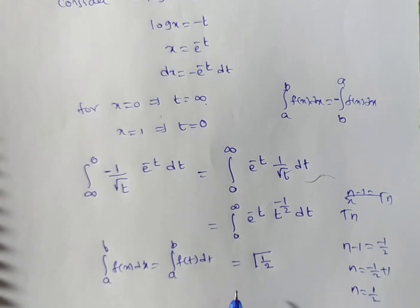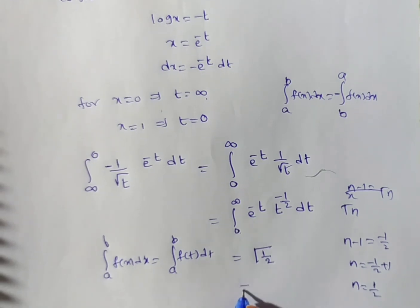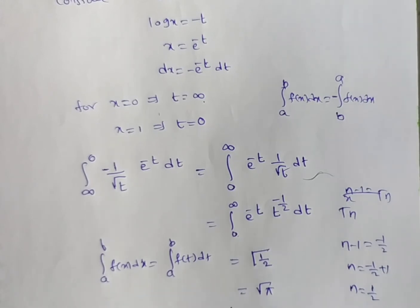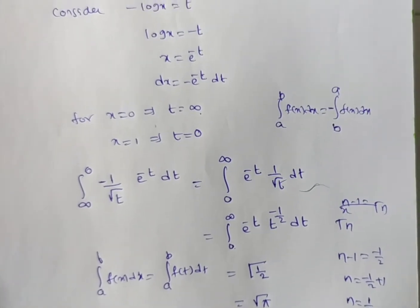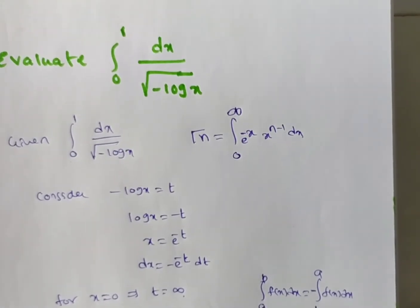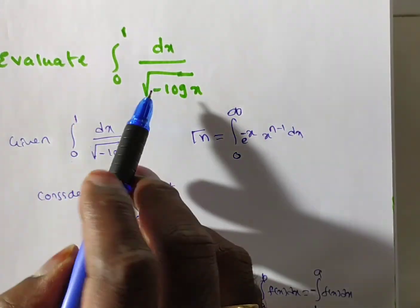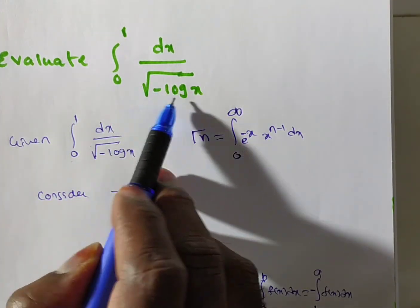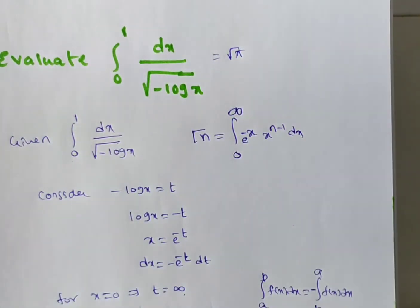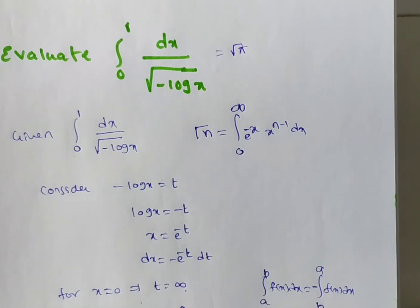Gamma of 1/2 is nothing but root pi. So the solution is: the integral from 0 to 1 of dx divided by the square root of minus log x equals root pi. Is that clear for everyone?